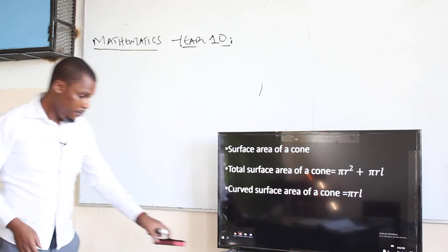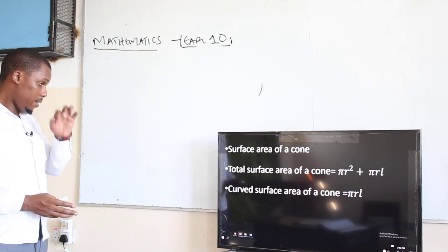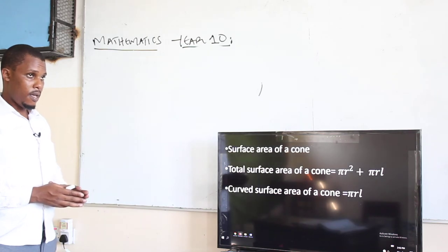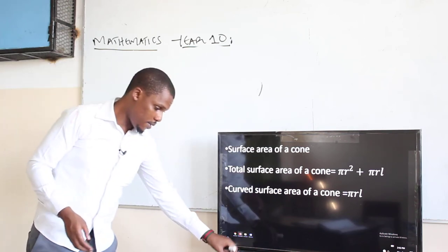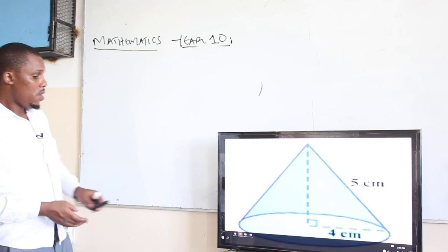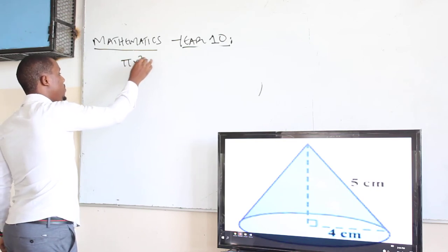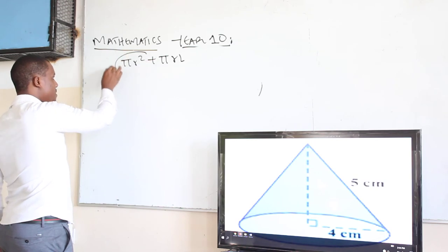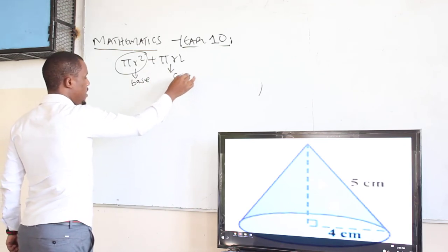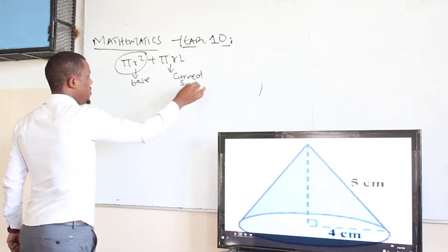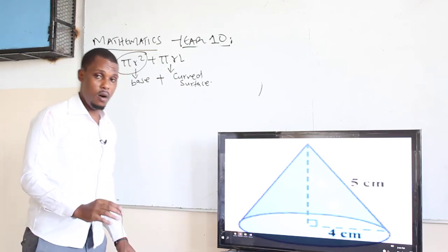In the case of the cone, we are saying that the surface area of a cone is given by πr² plus πrl. The formula has two parts: πr² is the area of the circular base, and πrl is the curved surface. Once you take the addition of the two, that's when you come up with the total surface area of the cone.